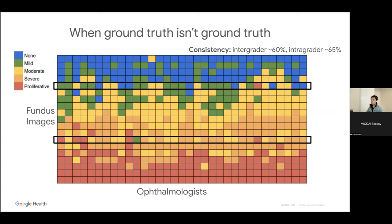Every row in this visualization is an image, and every column represents grades by ophthalmologists. We'd ideally want uniform horizontal bands of color representing each grade. But that's not what we see. One particularly interesting example is a row that has one of every single one of the five grades — which is shocking at first, but makes sense because many of these gradings are somewhat subjective. There is inter-observer and even intra-observer variability.